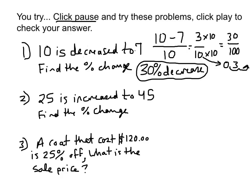Number two, 25 is increased to 45. Find the percent change. The amount of change, the difference between 45 and 25 over the original amount of 25. 45 minus 25 is 20. 20 over 25.